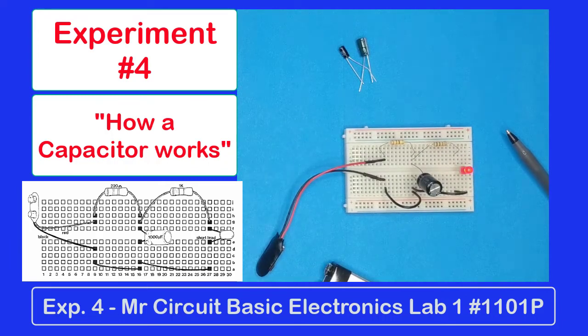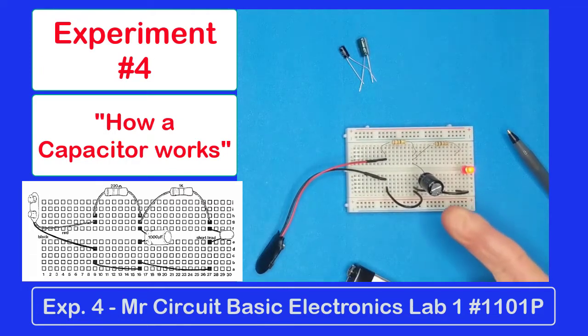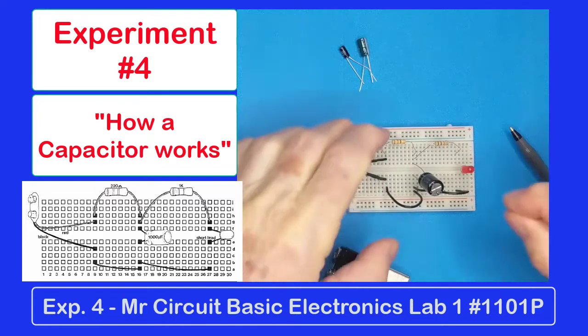Look at that. The LED is lit, and it's getting dimmer and dimmer. Let's try it again. The capacitor's charged. No battery is connected. And the LED is getting dimmer and dimmer. So that demonstrates that that capacitor will store a charge.